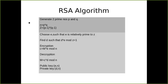Once you find d, you have both your public key and private key. The public key is (e, n) and the private key is (d, n). For encryption of any message M, you compute the cipher C = M^e mod n. For decryption, you reverse the process: M = C^d mod n. So the public key pair is (e, n) and the private key pair is (d, n).